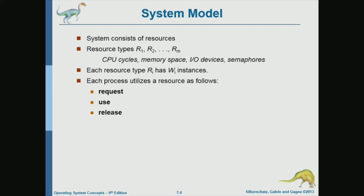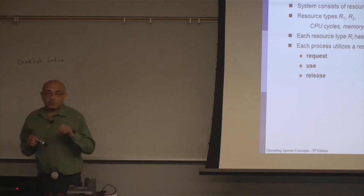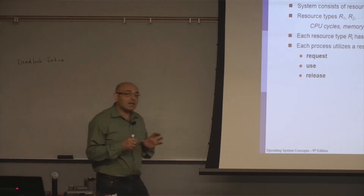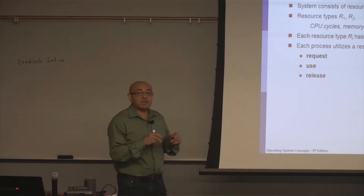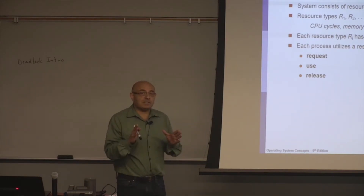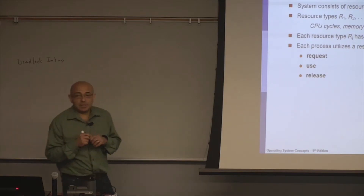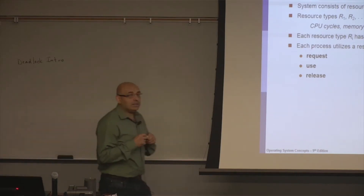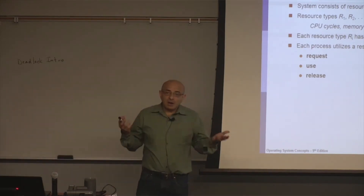Student: I think when two processes are waiting on each other. Instructor: That's a good definition, but it's not general enough. When two processes are waiting for each other — that's a deadlock. But this is not general enough because the number of processes waiting for each other doesn't have to be two. It can be three, four, or more. So it's two or more processes waiting for each other.